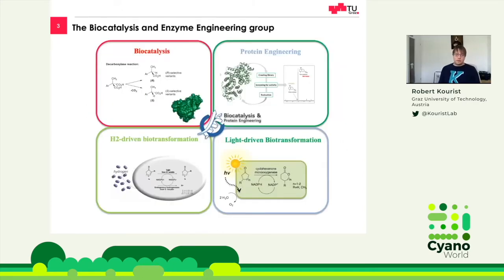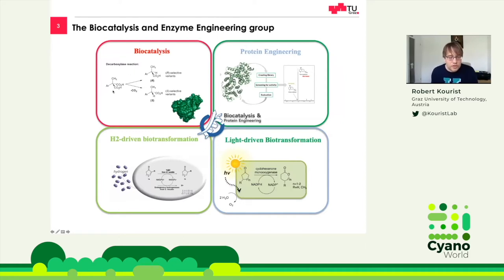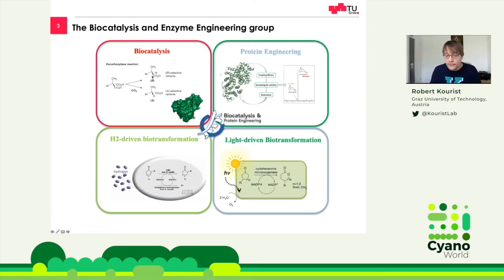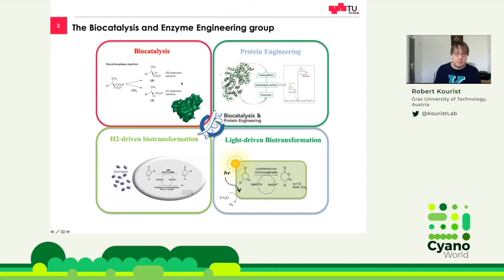I work mostly with isolated enzymes. Here you see a chemical reaction scheme of a substrate which can lead to two products. With enzymes, we can steer the reaction toward one of the two possible products. This is just the basic scheme of so-called profens — they are painkillers. We will have a lot of chemical structures because we talk about using cyanobacteria as catalysts for chemical reactions. What we do is tune the enzymes by protein engineering and then use them by biocatalysis.